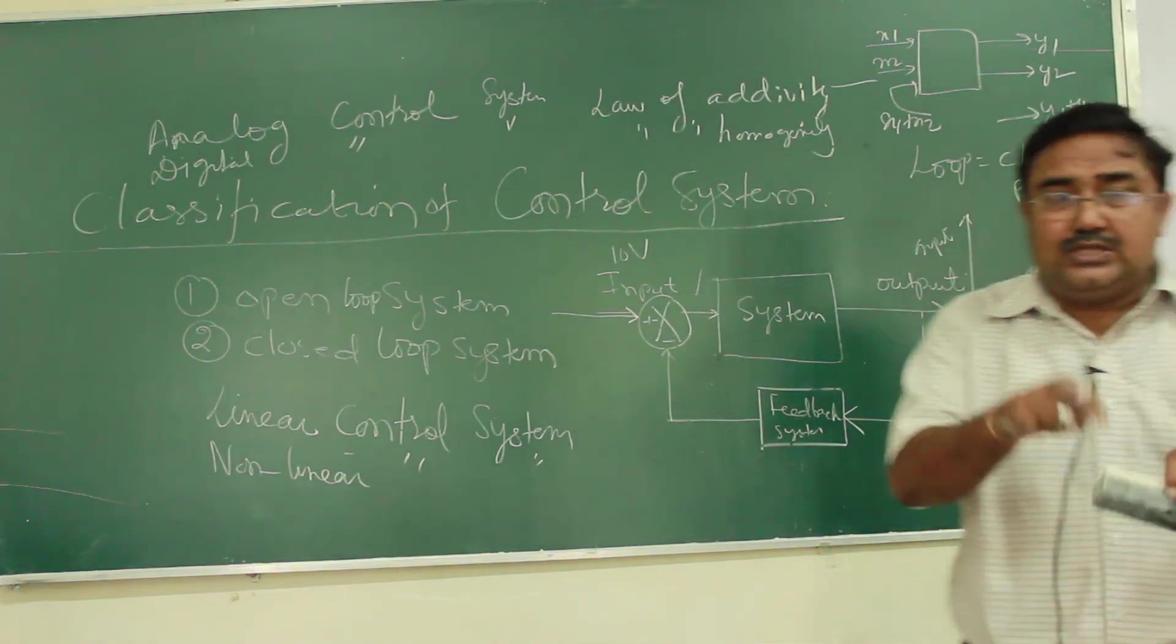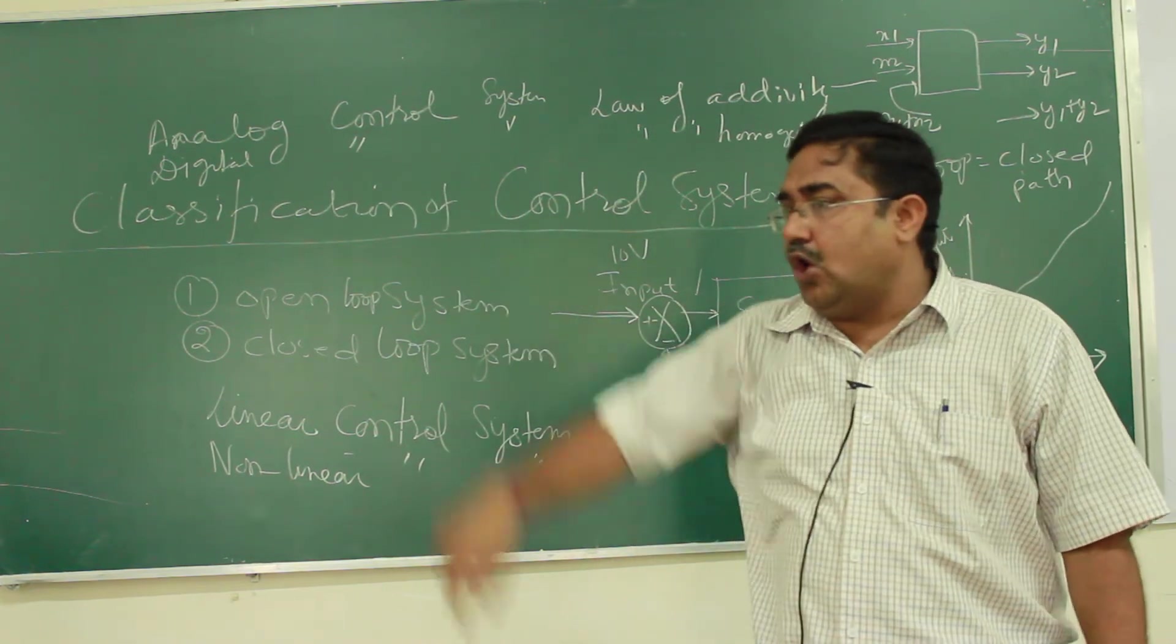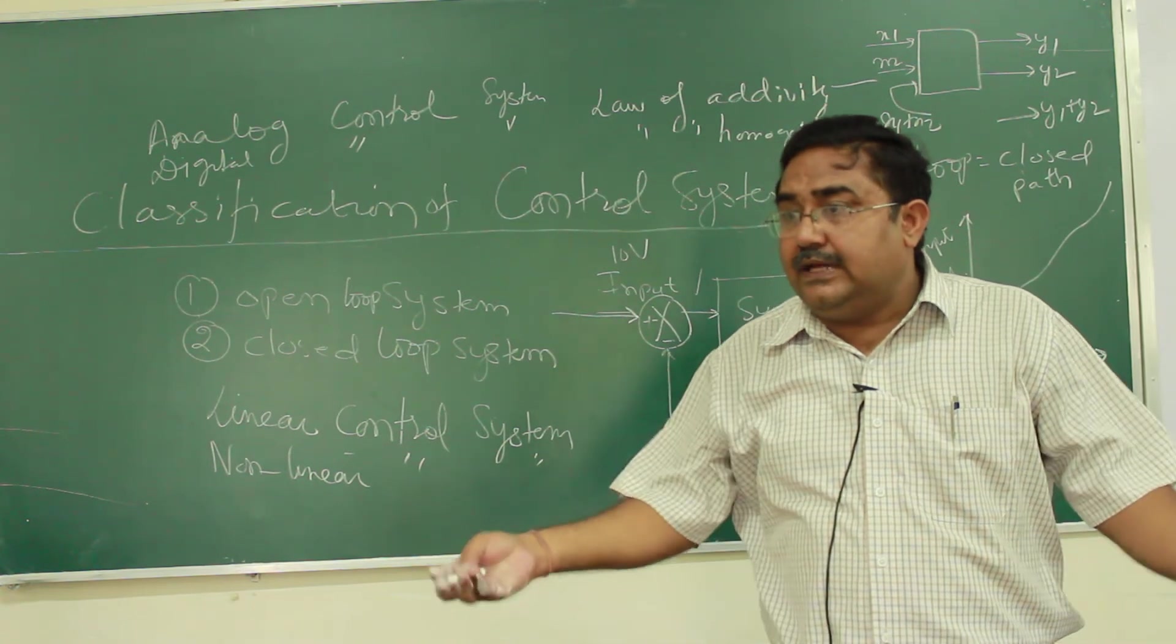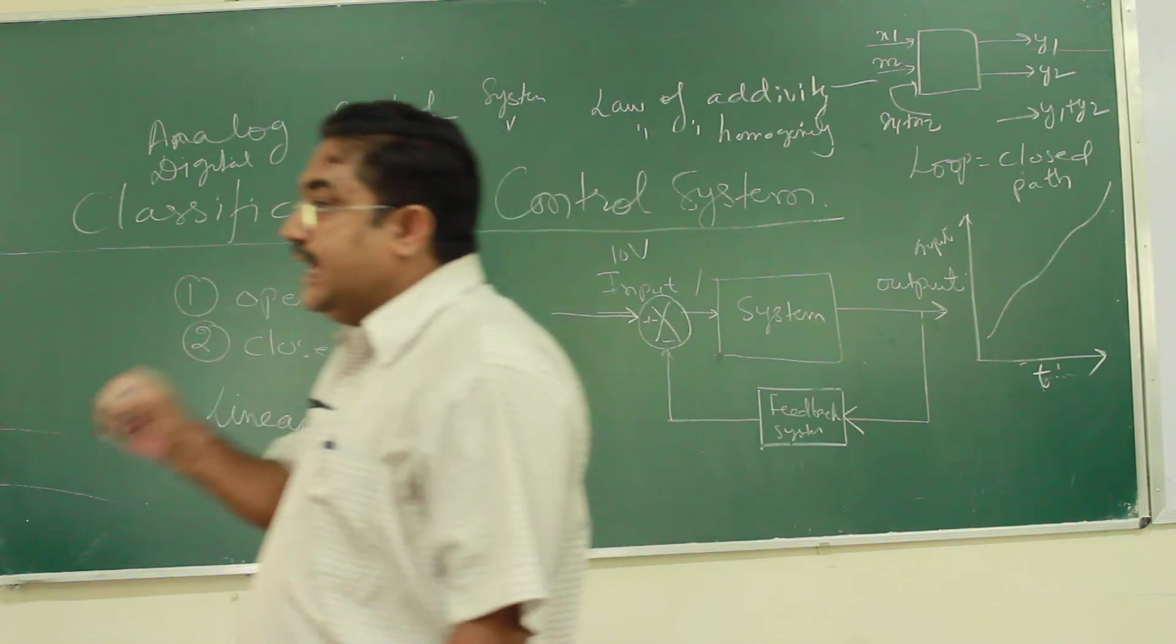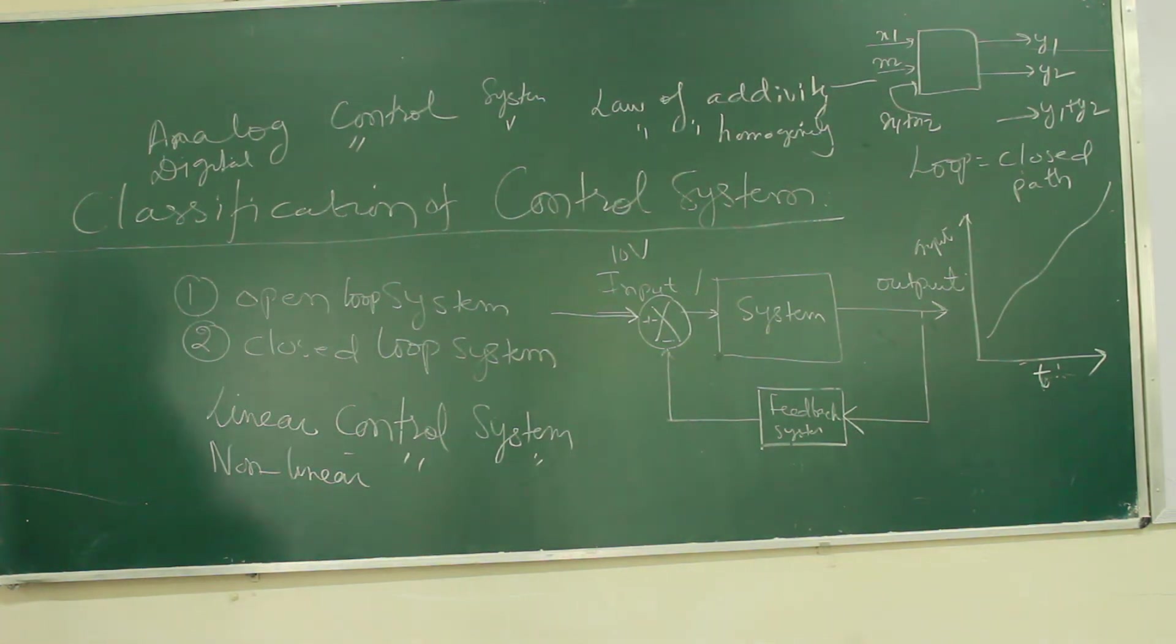High speed means you just give a formula, it will perform within one second. Give an algorithm, the computer will perform within milliseconds. But it will accept the data in which form? Zero and one. That is in digital form.